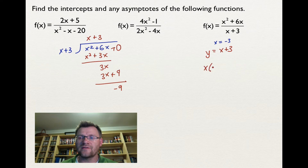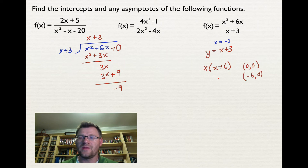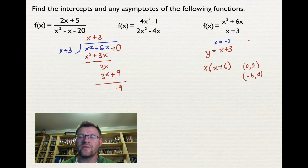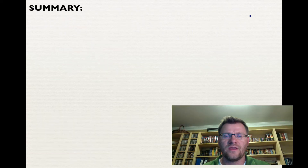We still need to find the intercepts. Factoring the numerator gives x(x + 6), so the x-intercepts are at (0, 0) and (-6, 0). For the y-intercept, plugging in x = 0 gives 0 divided by 3, which is 0. So the point (0, 0) serves as both an x-intercept and the y-intercept.